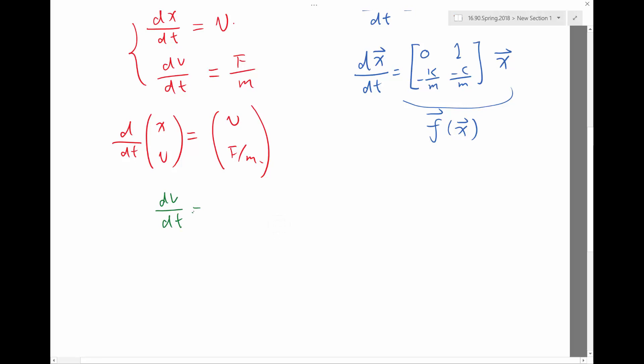dV/dt equal to, I'm also going to rearrange your mass. So divide it out. Minus G minus D over M.